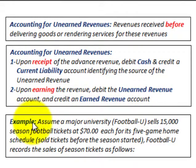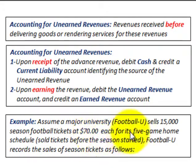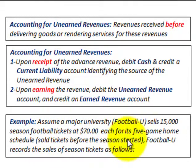So let's look at an example. Let's assume a major university — let's call it Football U — sells 15,000 season football tickets at $70 each for its five-game home schedule. Now they sold these tickets before the season started, before they began playing the games.